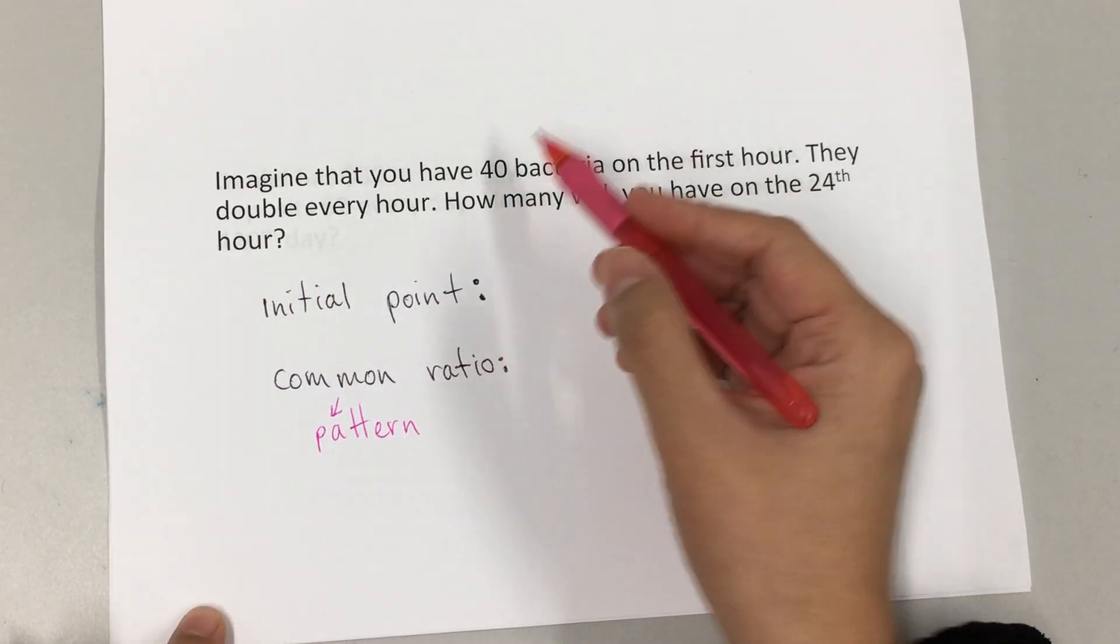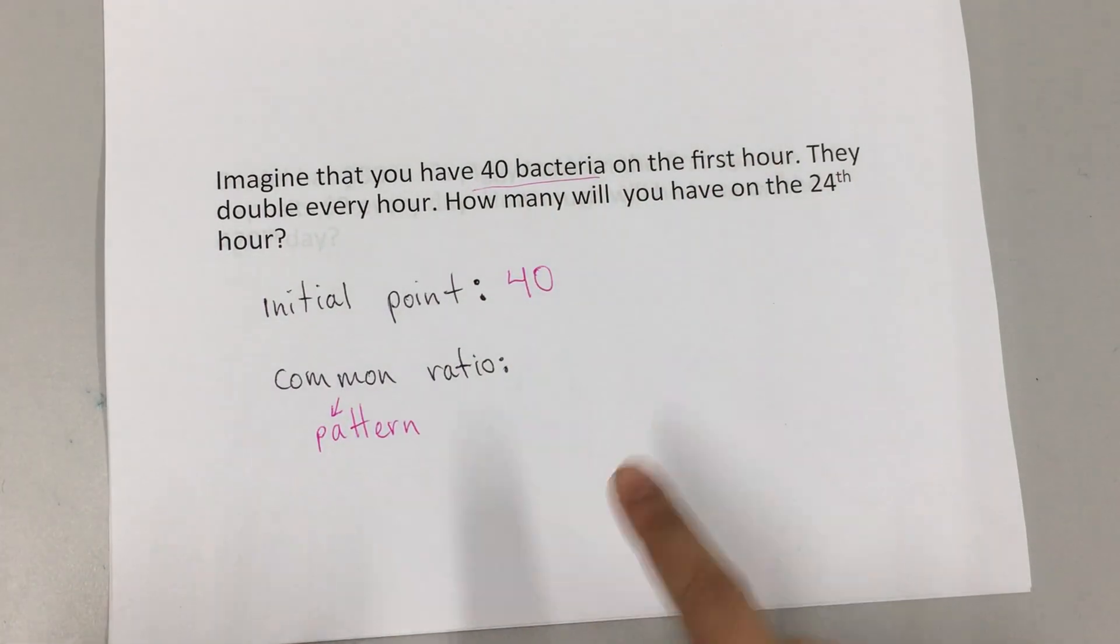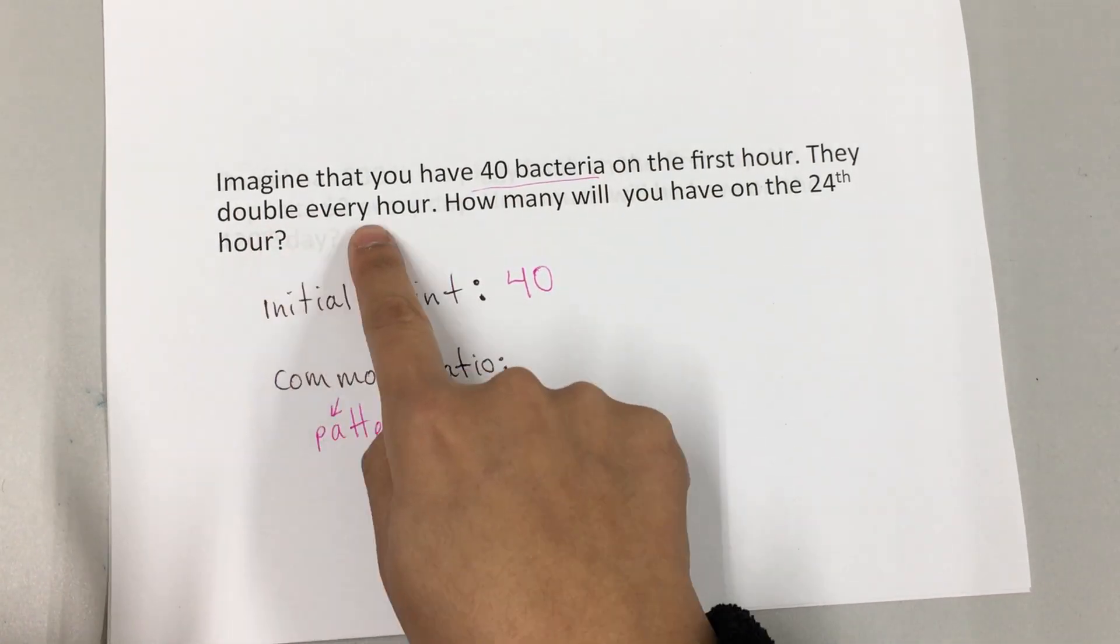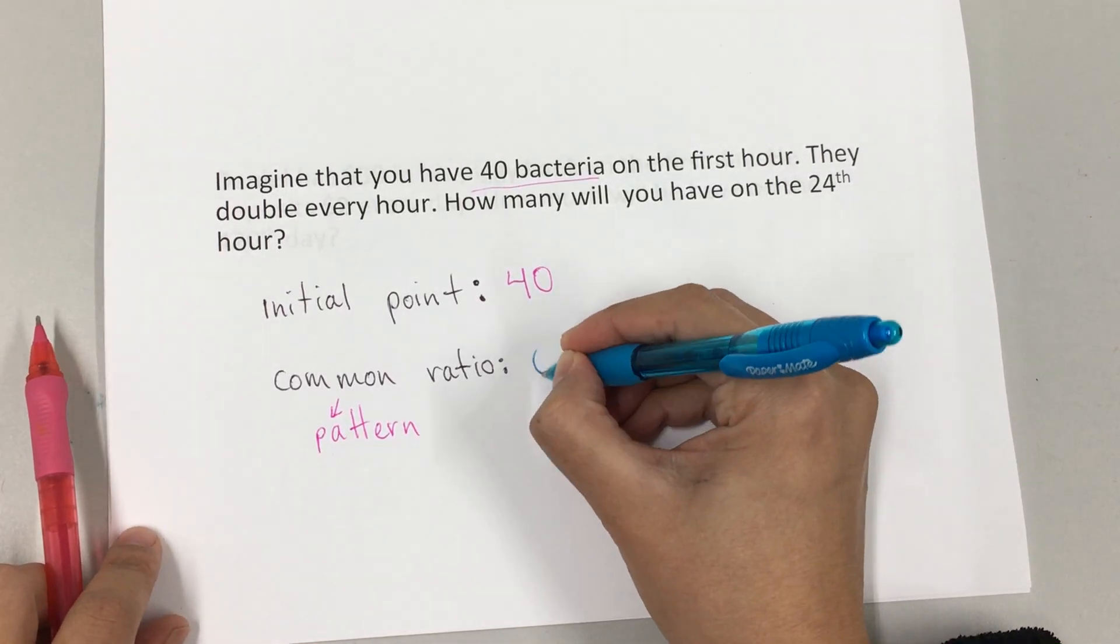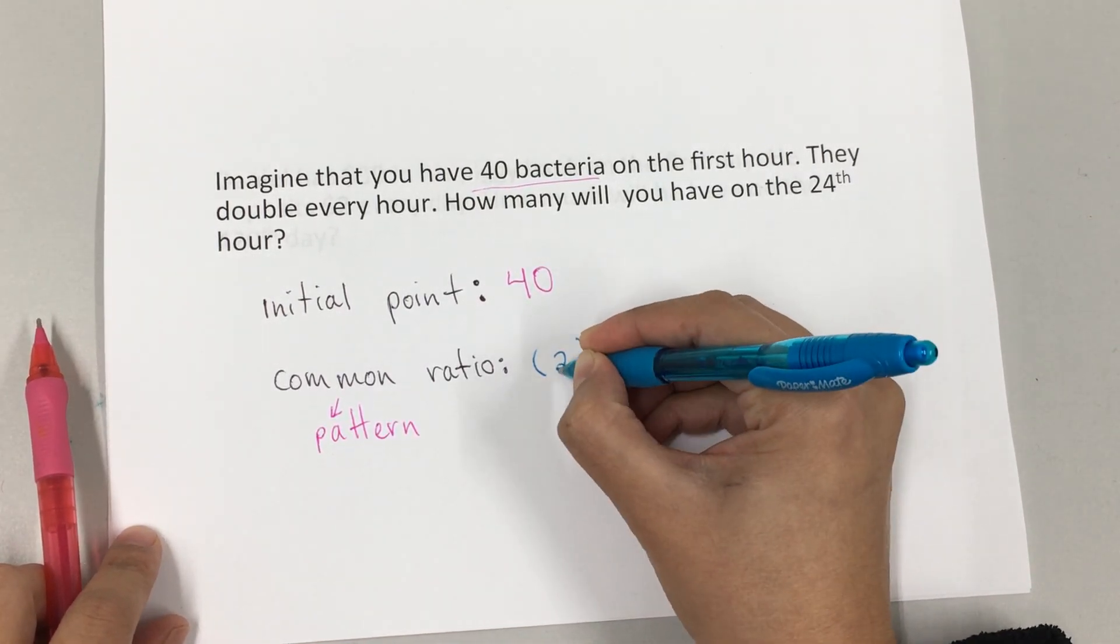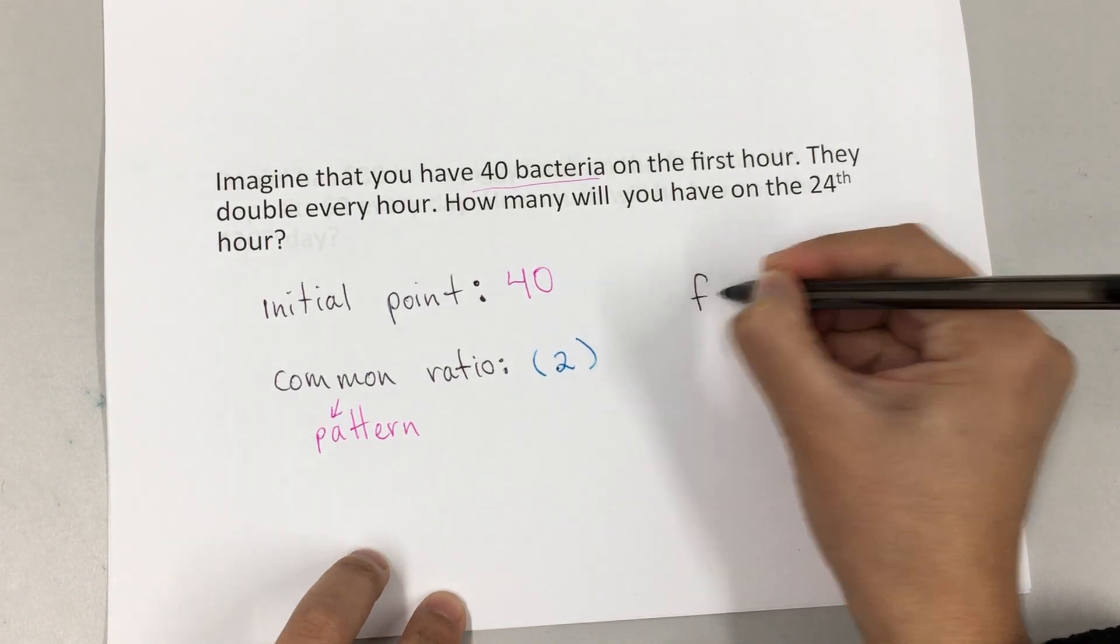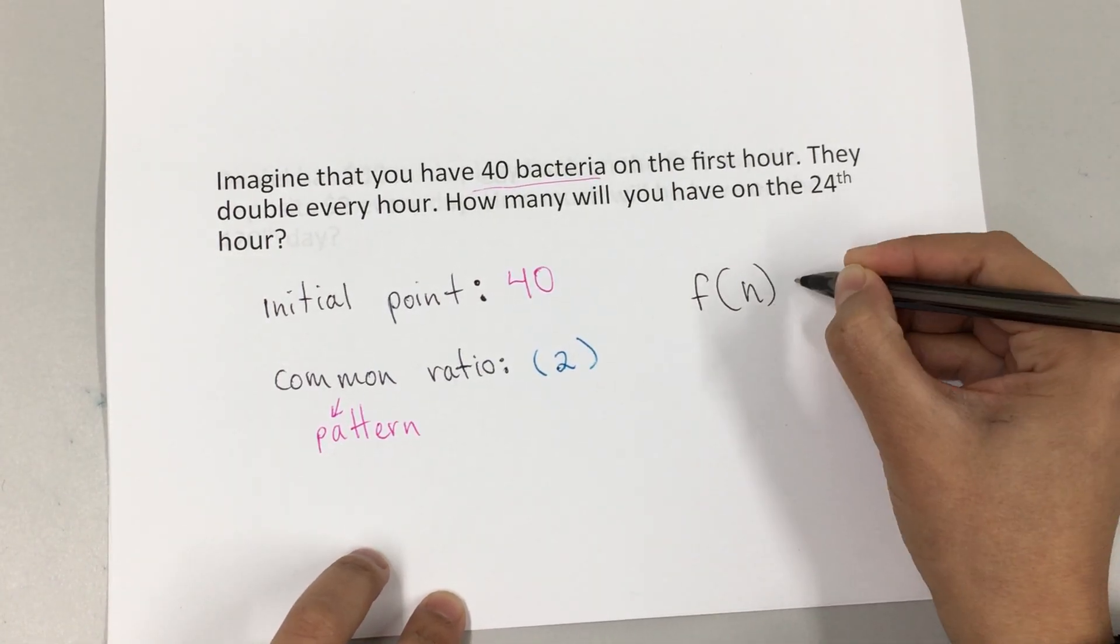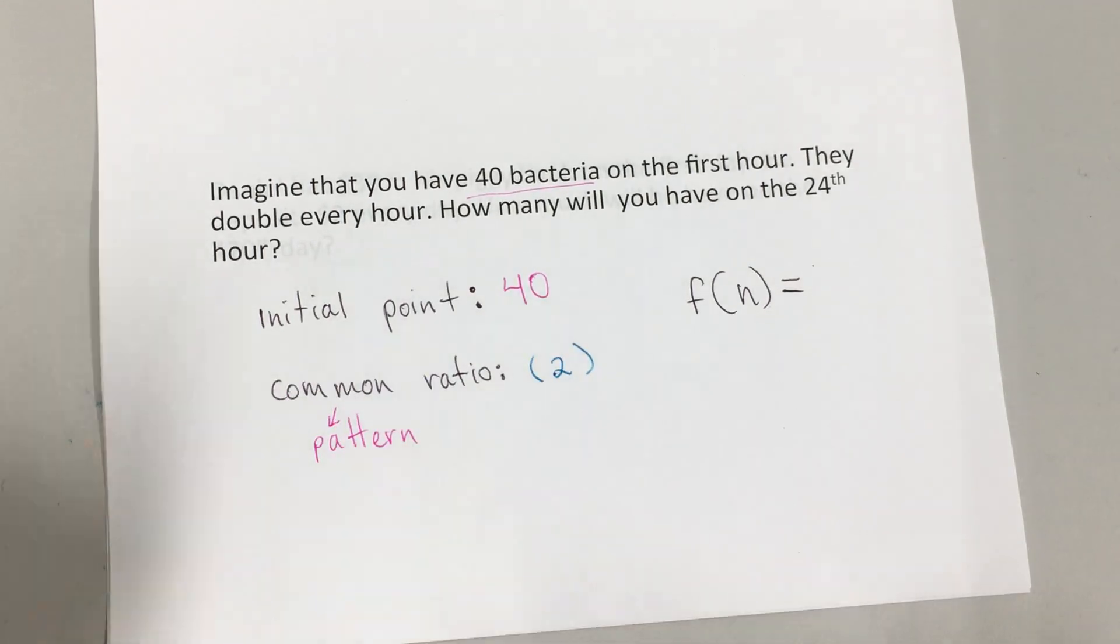With, so it would be 40 bacteria. It says that it doubles every hour, so that will be what's happening to it. Doubles every hour means multiply by 2. So for my explicit formula I'm going to write f(n) equals the initial point which is 40...